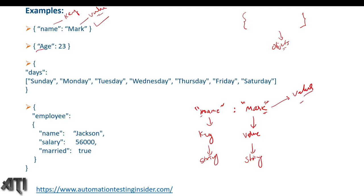If we have a key that holds 23, that is a number data type. So 23 is a number data type. If we talk about the third example, 'days' is a key and it holds an array. Arrays should always be written within square brackets. It holds an array of strings — the seven days of the week: Sunday, Monday, Tuesday, Wednesday, Thursday, Friday, Saturday — all written within square brackets.